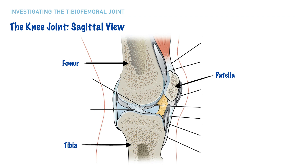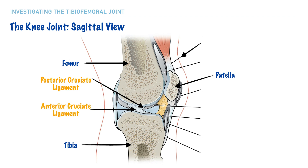Now we're examining the knee from a sagittal view. Here again we see the femur, tibia, and patella. In addition to these structures, we have the posterior cruciate ligament and the anterior cruciate ligament. We also have the patellar tendon, which allows the quadriceps muscles to attach to the patella and then to the tibial tuberosity as the patellar ligament.